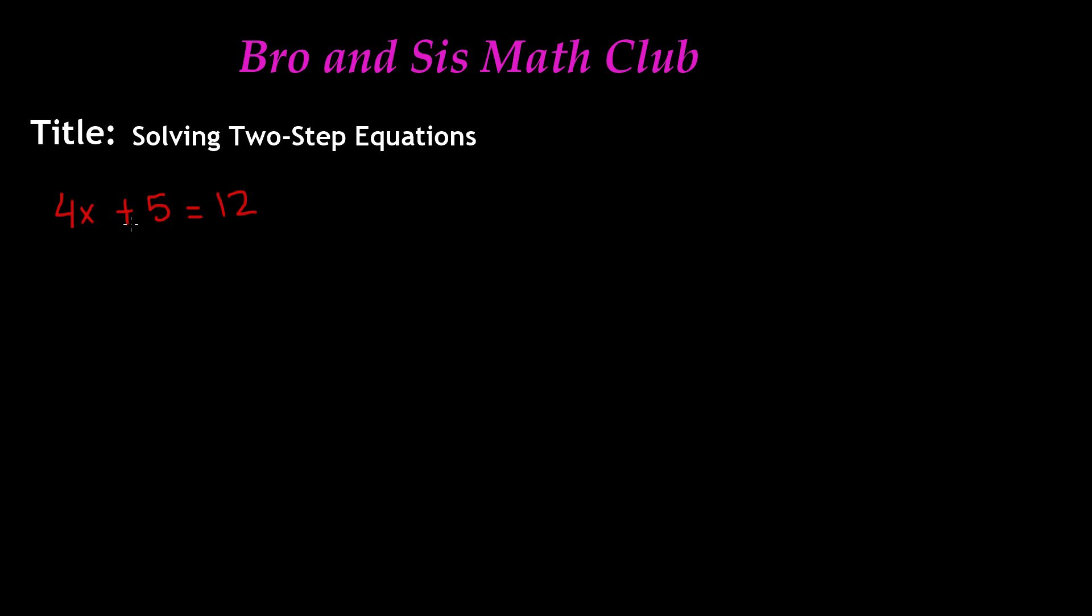So we see that we have plus 5 here. So the operation is addition, so we need to do the inverse operation of addition, which is subtraction. So if you want to get rid of plus 5, we're going to have to do minus 5. So if we do minus 5 to this side, remember we must do it to the other side as well.